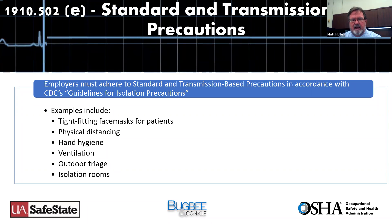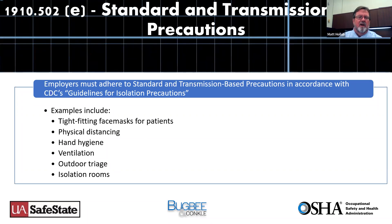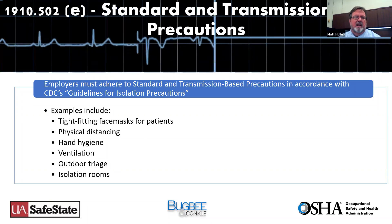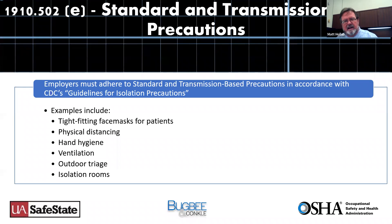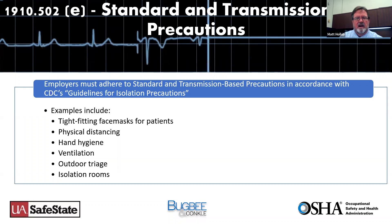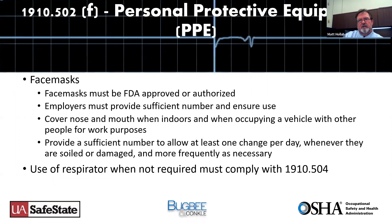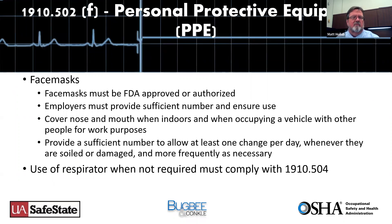Employers must adhere to standard and transmission-based precautions in accordance with CDC's guidelines for isolation precautions — that's essentially a straight incorporation by reference into this rule. Examples from that document include tight-fitting face masks for patients, physical distancing, hand hygiene, ventilation, and outdoor triage to identify who may be at risk before coming indoors.